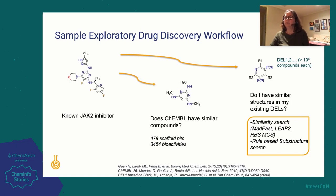ChemAxon has a particularly rich toolset for similarity and substructure searching — this is one of our strengths. We have MadFast, which can do really fast similarity comparison on huge enumerated compound libraries in the millions, and even though we have a library of over a billion that we've worked on. We have recently developed or reintroduced some additional tools for similarity: the rule-based search using MCS, and the Leap-to search. Both of these operate on non-enumerated libraries or Markush space. The same is true for our newest substructure search method, which is also a rule-based search.